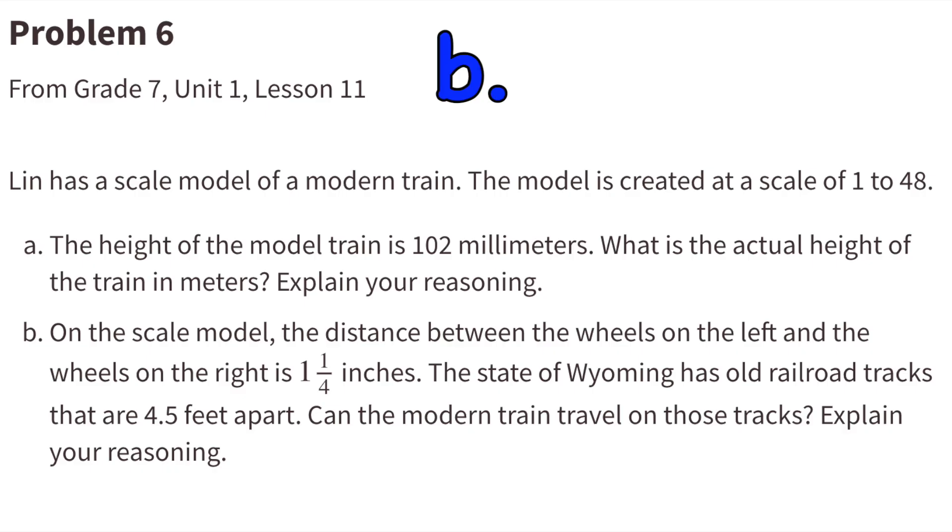Part b: On the scale model, the distance between the wheels on the left and right is 1 1/4 inches. The state of Wyoming has old railroad tracks that are 4.5 feet apart. Can the modern train travel on those tracks? Explain your reasoning.